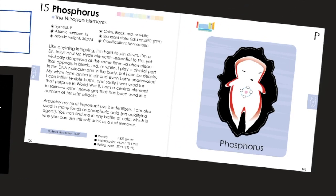So here is phosphorus. Like anything intriguing, I'm hard to pin down. I'm a Dr. Jekyll and Mr. Hyde element — essential to live, yet wicked dangerous at the same time. A chameleon that appears in black, red, and white. I play a pivotal part in the DNA structure and in the body, but I can be deadly.